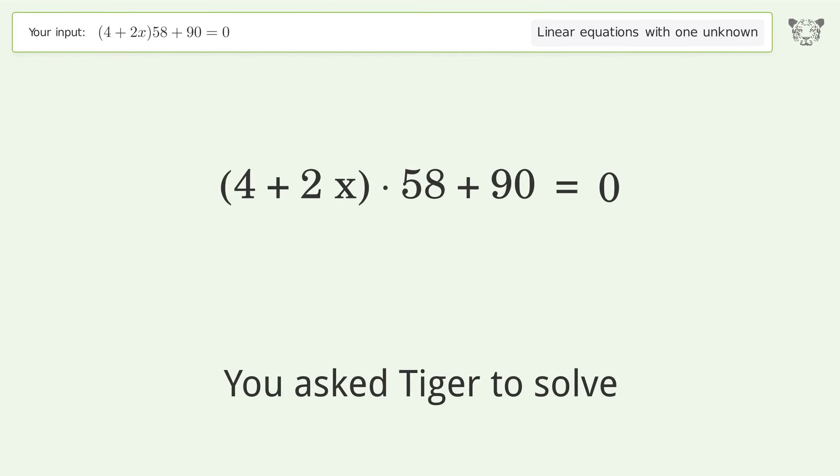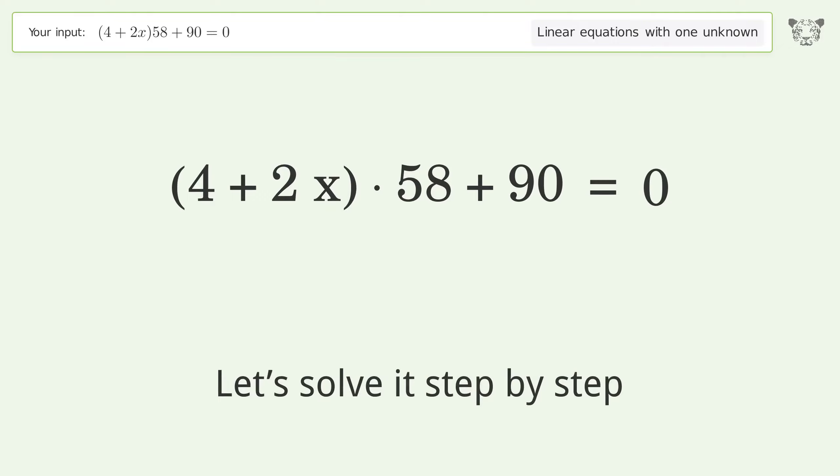You asked Tiger to solve this linear equation with one unknown. The final result is x equals negative 161 over 58. Let's solve it step by step.